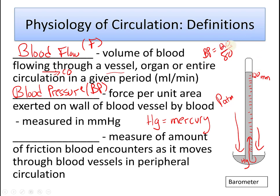The top number is called the systolic pressure. The bottom number — 80 in this case — is called the diastolic pressure. The diastolic pressure of 80 means the force of blood on the vessel wall is the same force required to push mercury up a column 80 millimeters high. The last term is peripheral resistance, abbreviated PR.